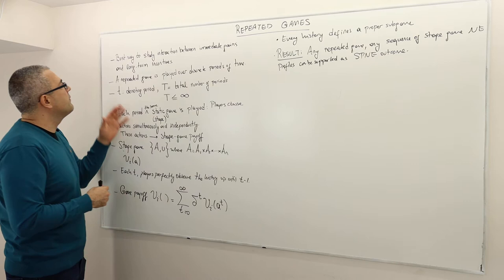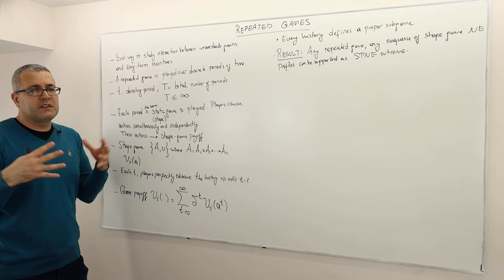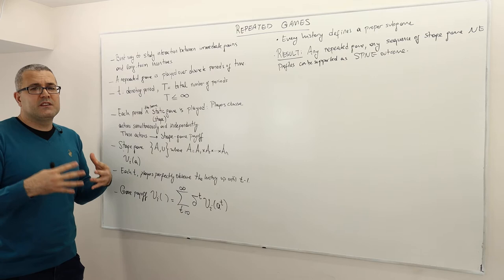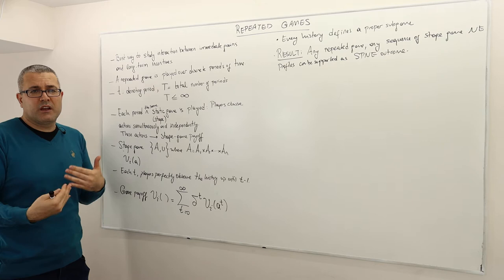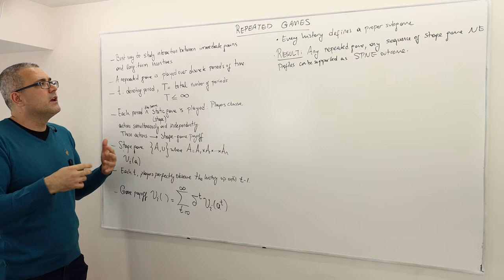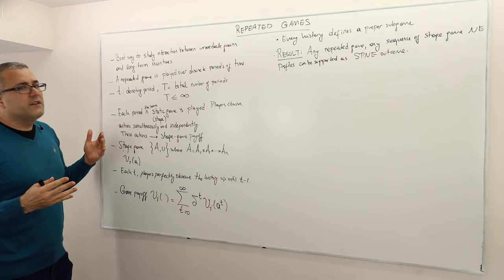For that reason, we analyze repeated games. Repeated games are actually the best way to study the interaction between immediate gains and long-term incentives. For example, in the mechanic example, the mechanic may want to cheat and overcharge you. But he knows that if he does this and you realize it, he's probably going to lose you as a customer. So sometimes immediate gains outweigh long-term incentives, and sometimes long-term incentives outweigh the immediate gains, and that changes the strategic interaction every period.